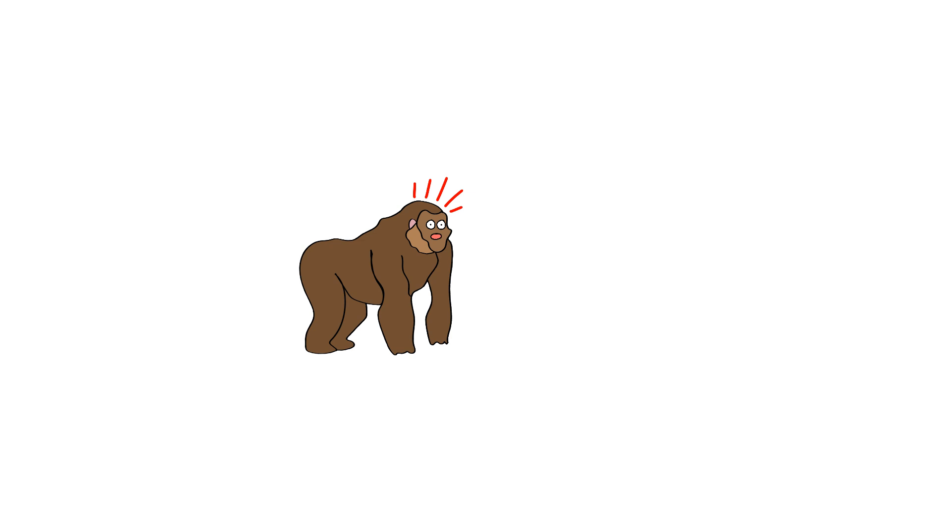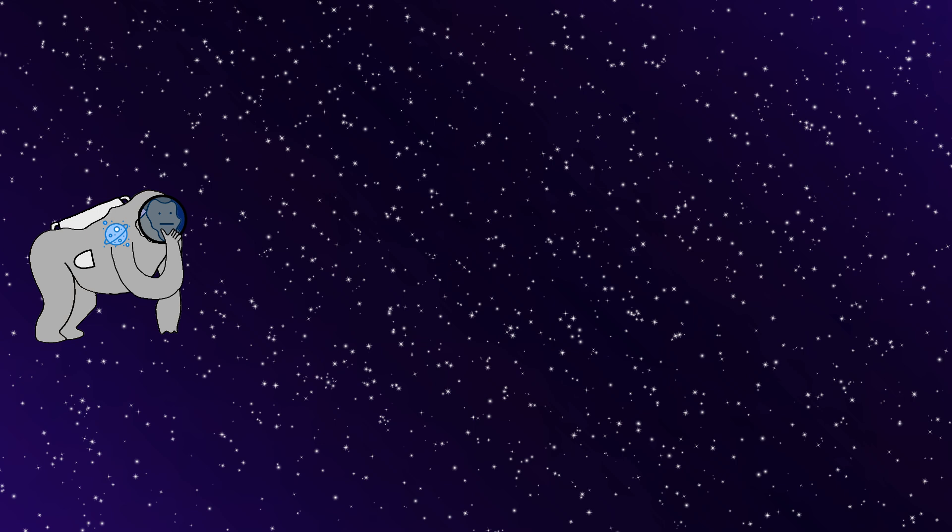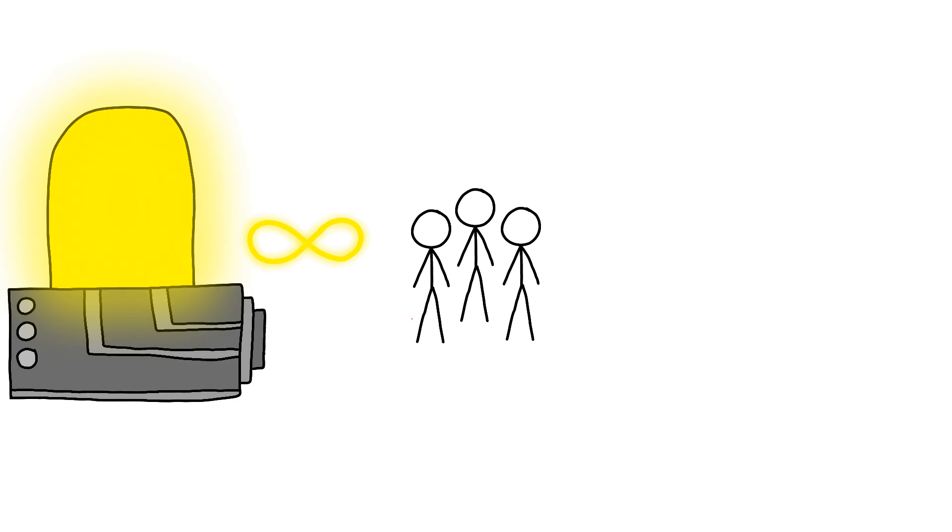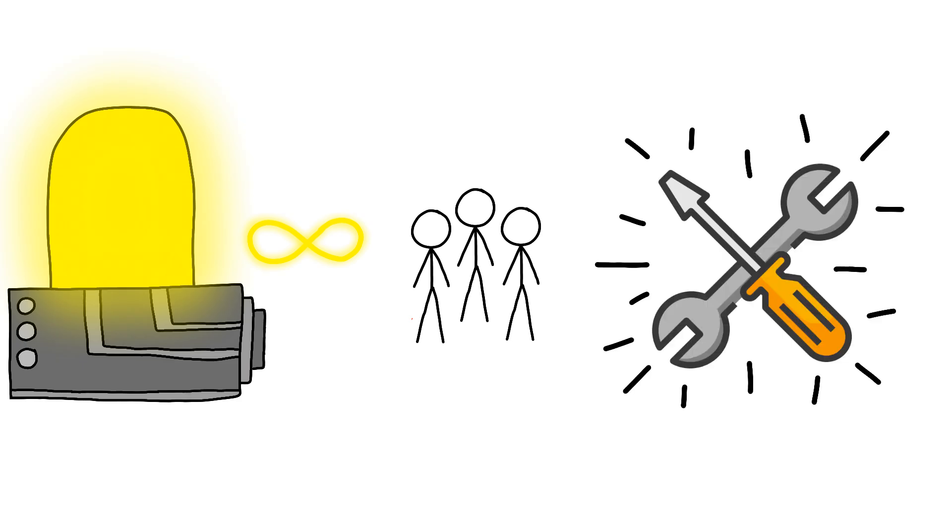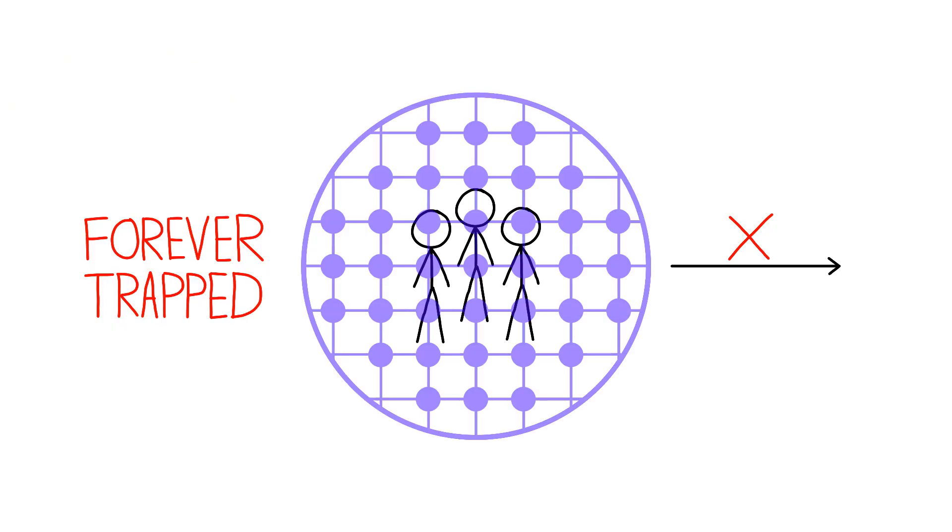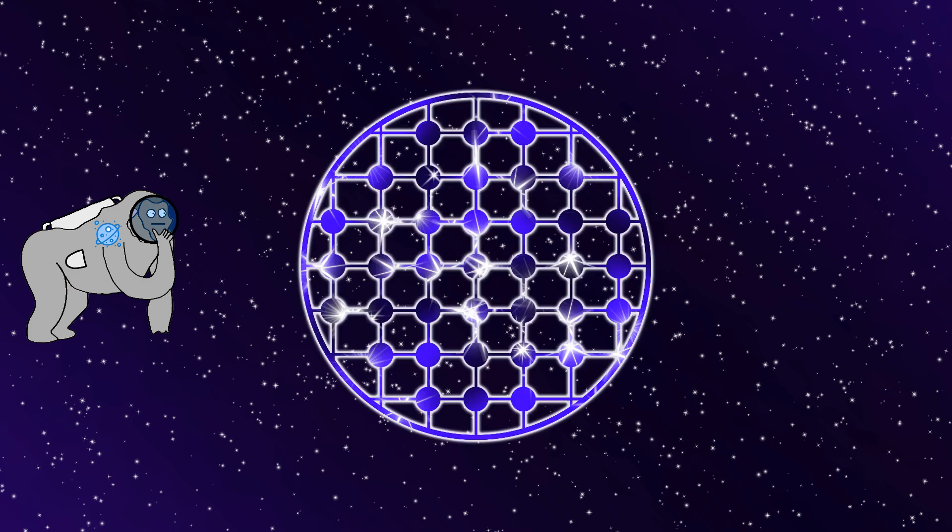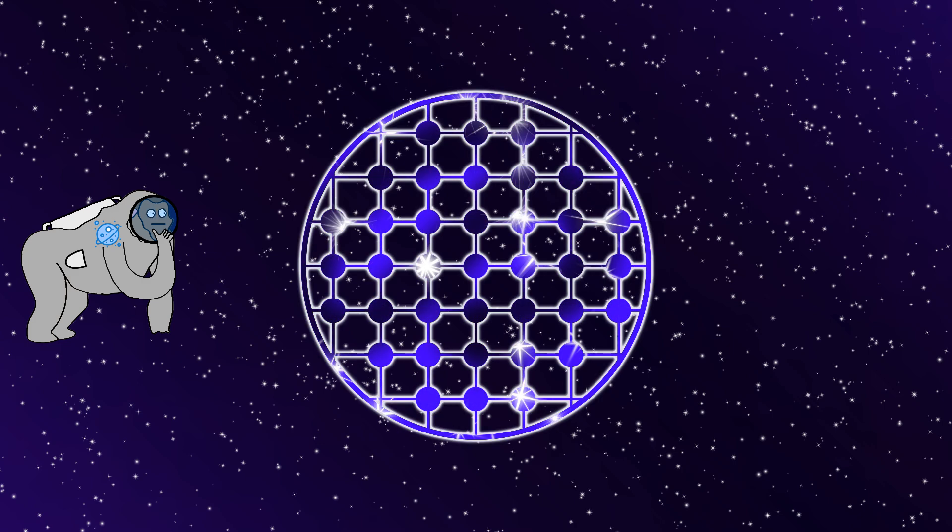And the most crushing realization hits Monkey like a cosmic sledgehammer. Because Monkey realizes that even though life inside the sphere is perfect, and humans have unlimited energy and can build anything they want, they can never leave. Because the sphere has become their entire universe. And Monkey's thinking, Monkey has created the most beautiful prison ever built. And humanity is trapped forever.